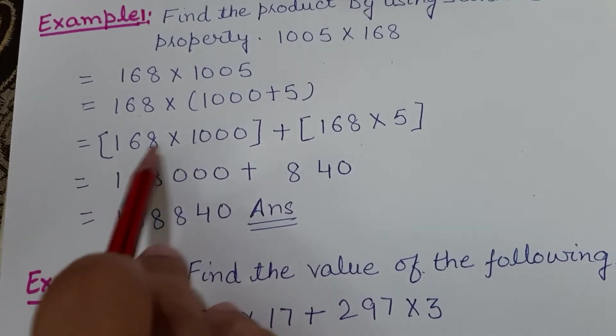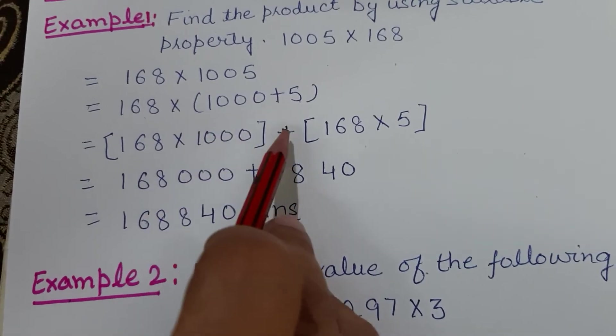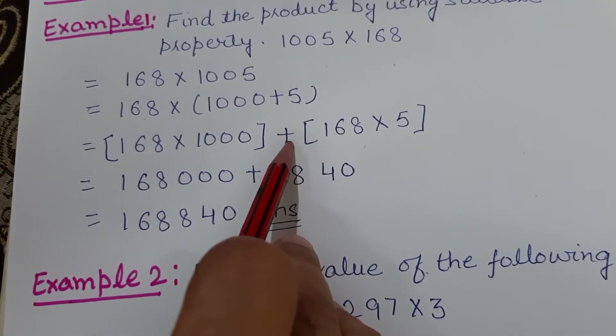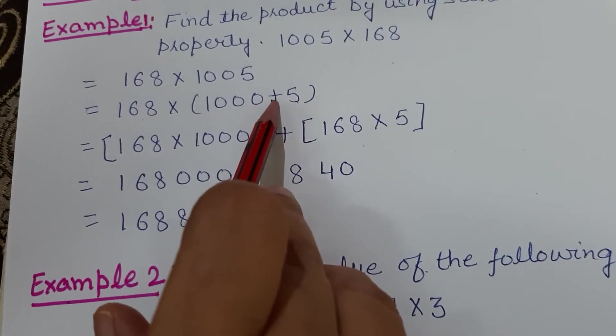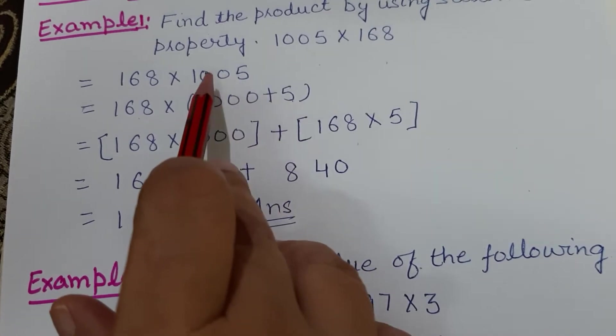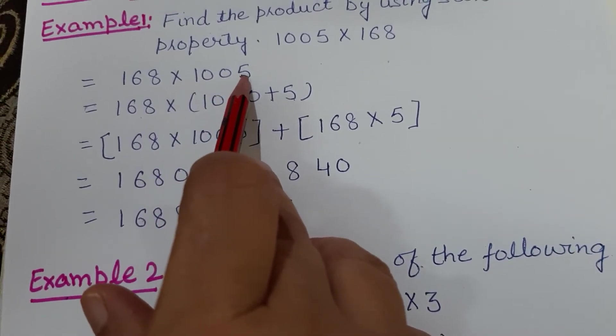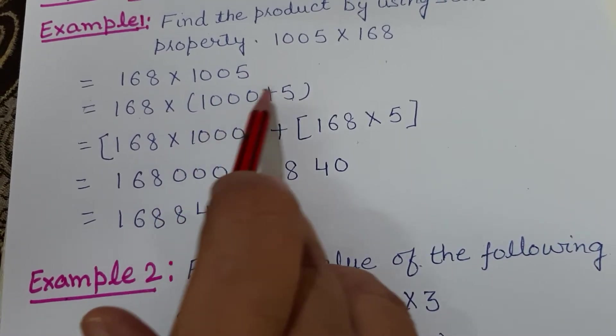Now which sign will come here? If here it is plus, you will use plus sign. If it is negative—suppose it is written 98, which can be broken as 100 minus 2 since 98 is nearest to 100—then you will use negative sign.